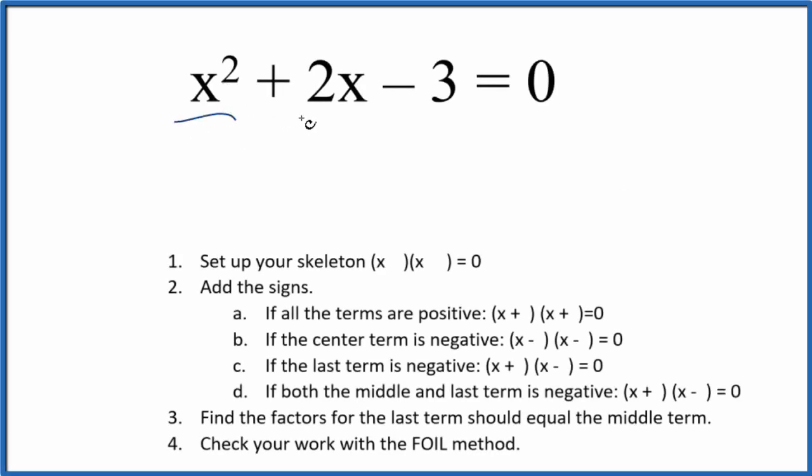Let's factor the equation x squared plus 2x minus 3 equals 0. We use these guidelines right here to help us do that.